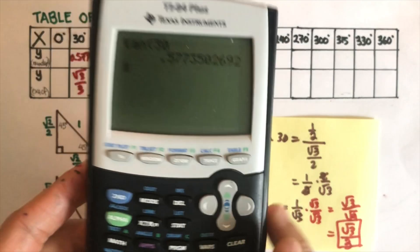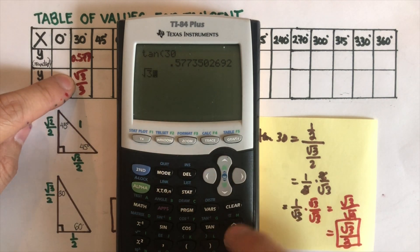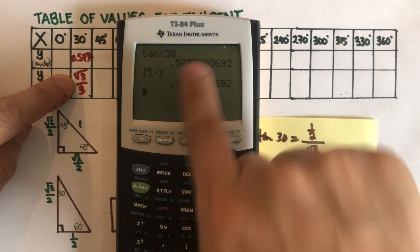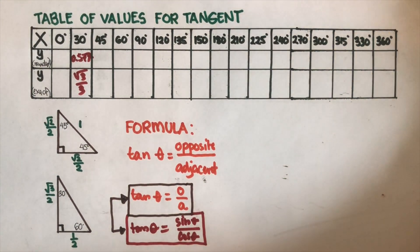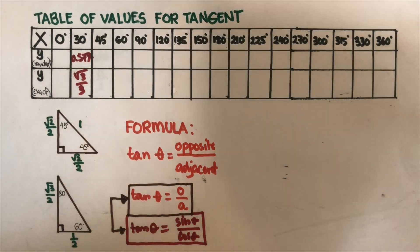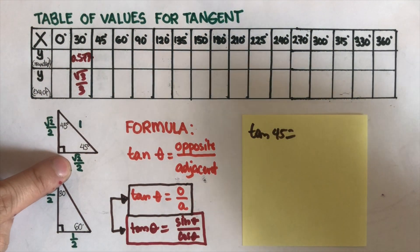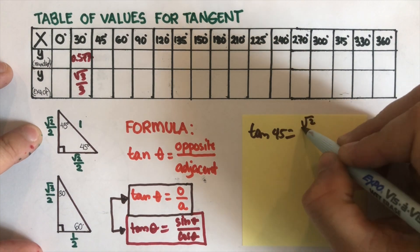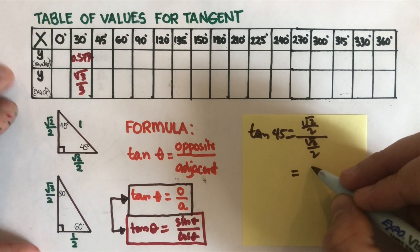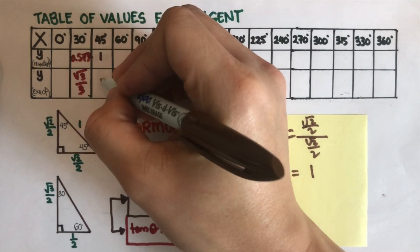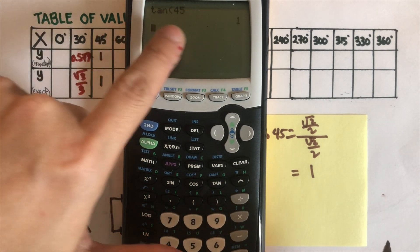Now let's check if the answers are the same. I got tangent of 30 and let's put in square root of three divided by three — it is the same value. Now let's have tangent 45. To get tangent 45, we use the special right triangle. That gives tangent 45 equals opposite over adjacent, which is square root of two over two divided by square root of two over two, equal to one. We can verify this with the calculator: tangent 45 is one.